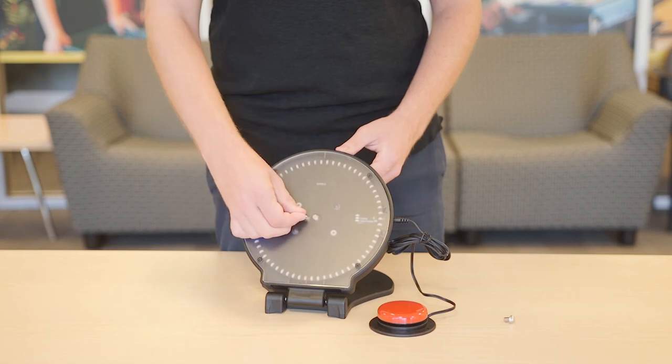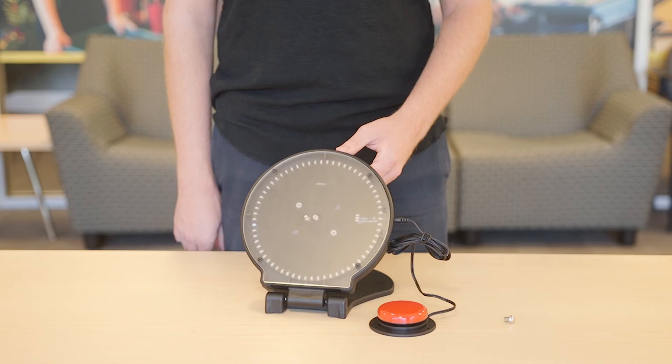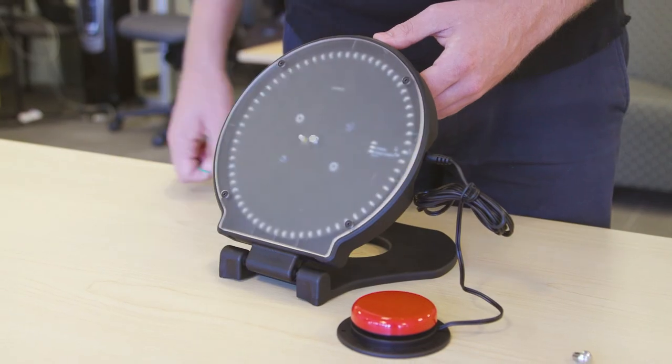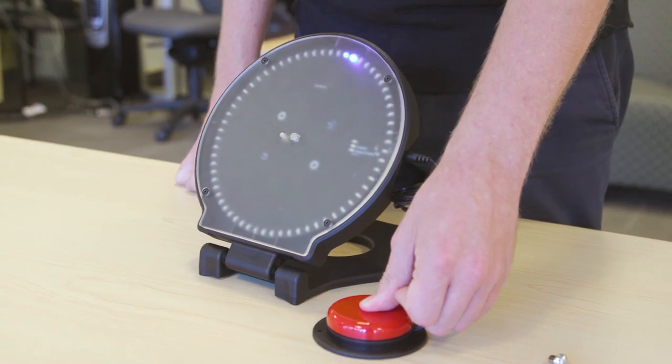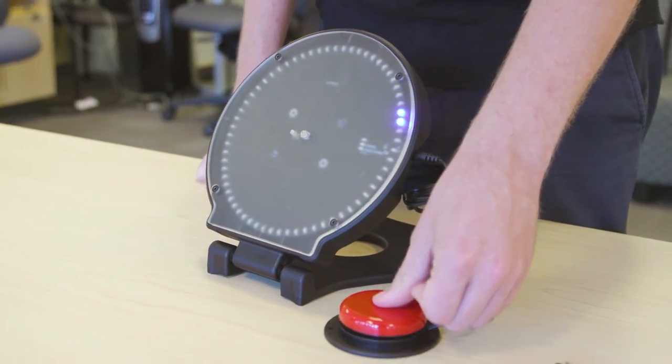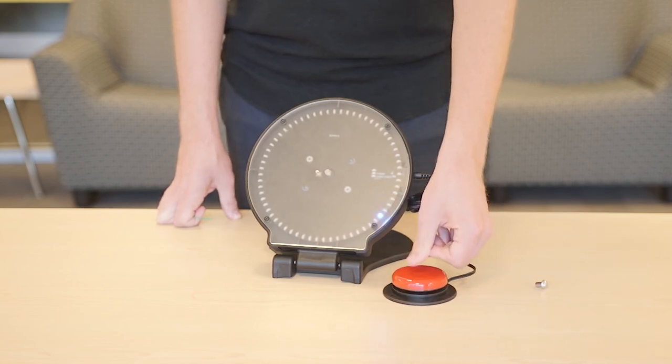Unlike modes 1 and 2, mode 3 allows the child to determine a specific outcome by choosing where to stop the spinning light. Holding down the accessibility switch causes the lights to spin around. Releasing the switch stops the light at the desired point. Alternatively, the switch can be pressed repeatedly to advance one light at a time.